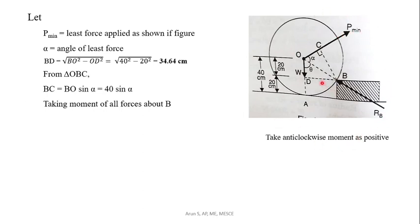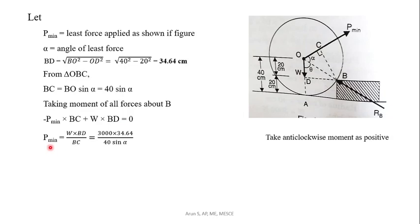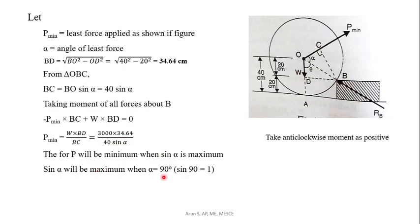Taking moment about point B, we get P minimum into BC minus W into BT equals zero. Substituting BC and BT, P minimum equals W into BT divided by BC. To minimize P minimum, sin alpha must be maximized. Sin alpha has a maximum value of 1, which occurs when alpha equals 90 degrees.